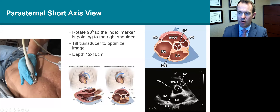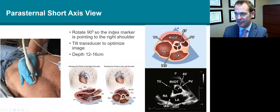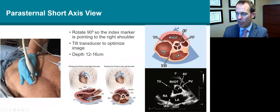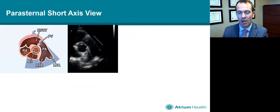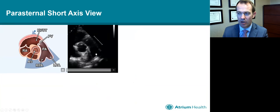From the parasternal long axis view, we then rotate the probe — keeping it in the same position but rotating the index marker from the right-hand shoulder over to the left-hand shoulder — to get the parasternal short axis view. Starting from the bottom going up, we have the left atrium, the interatrial septum, the right atrium, tricuspid valve, RVOT, pulmonary valve, and in the middle the aortic valve. We're going to view each of these valves using zoom and color Doppler. By going up an intercostal space, we can sometimes get a very nice view of the bifurcation of the pulmonary arteries.